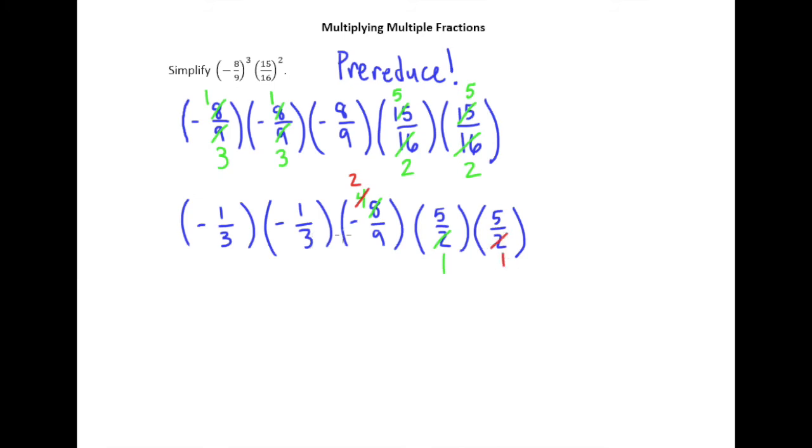Now, we look at the rest of this. It doesn't look like anything else is going to cancel. So we've completely pre-reduced. And the nice thing is, since I can see that nothing on top and nothing on bottom share common factors other than 1, I know that once I'm done multiplying, I will have a reduced fraction answer.